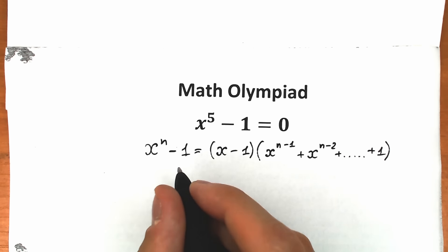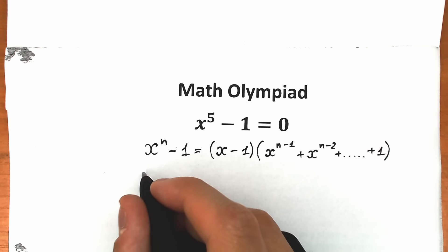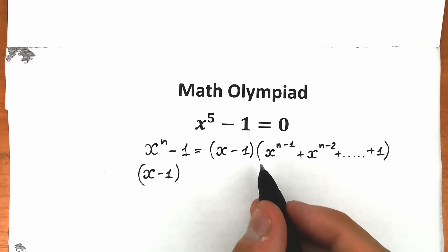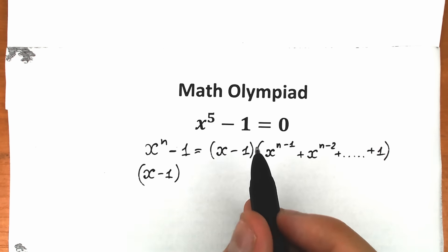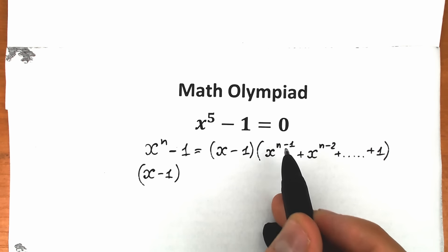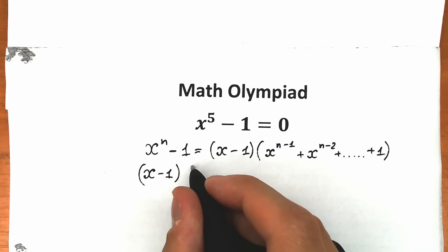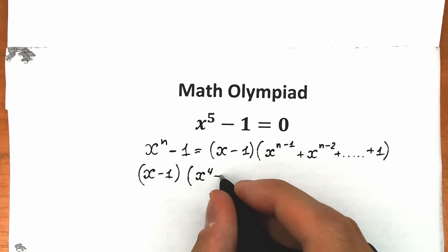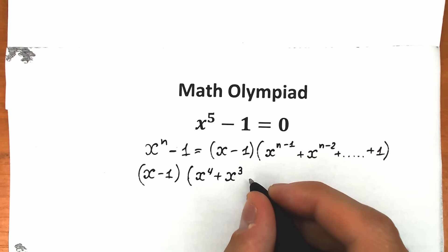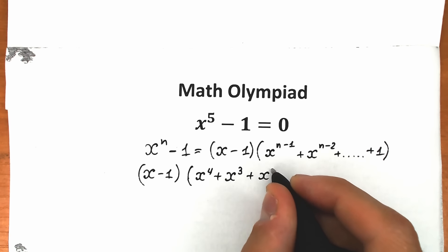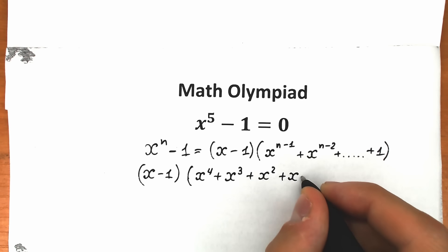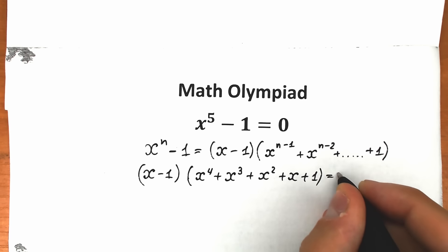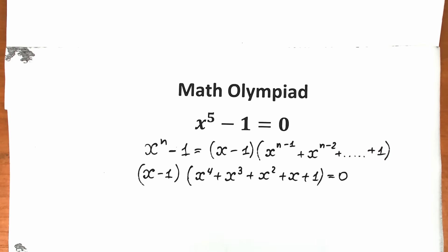Right now let's apply this expression — this is absolutely the same case. As a result, we have x minus one times another parenthesis. Let's plug in n equals five, so we have x minus one times the quantity x to the fourth power plus x cubed plus x squared plus x plus one, all equal to zero. So we have factored our expression.